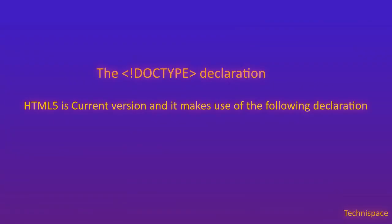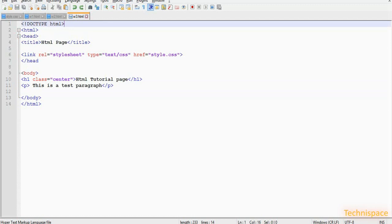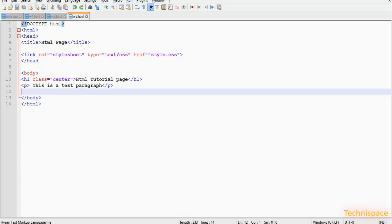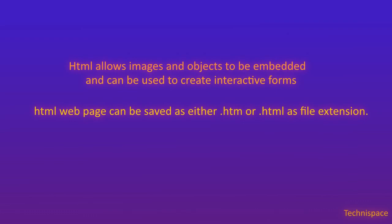The DOCTYPE declaration represents the document type and helps browsers display web pages correctly. It must only appear once at the top of the page, before any HTML tags. HTML5 is the current version and makes use of the DOCTYPE declaration. HTML also allows images and objects to be embedded and can be used to create interactive forms.